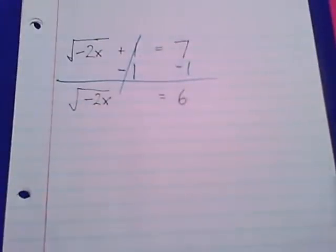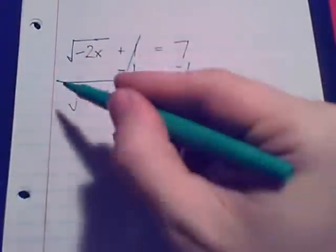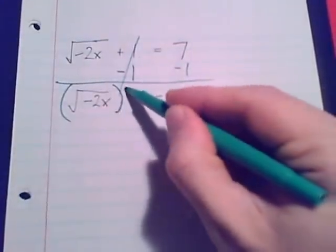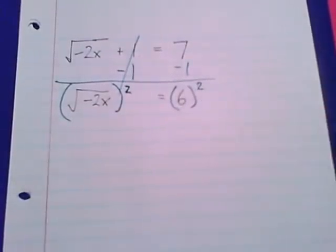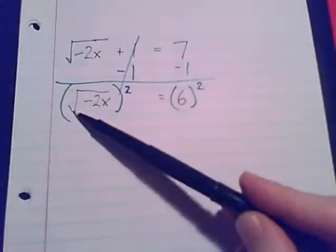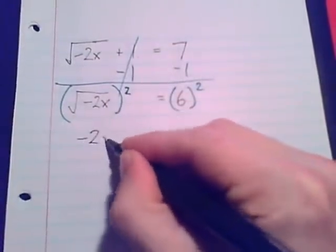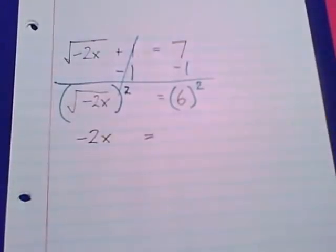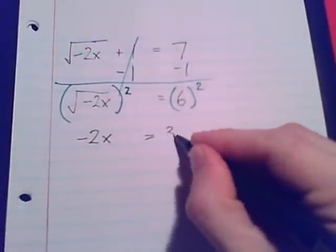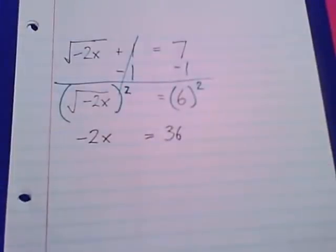I've got the equal 6 on the other side of the equation, so this radical is isolated, and now I can square both sides. The square root and the square will cancel, and the radicand, what's inside, comes out. Negative 2x equals 6 times 6, 36.